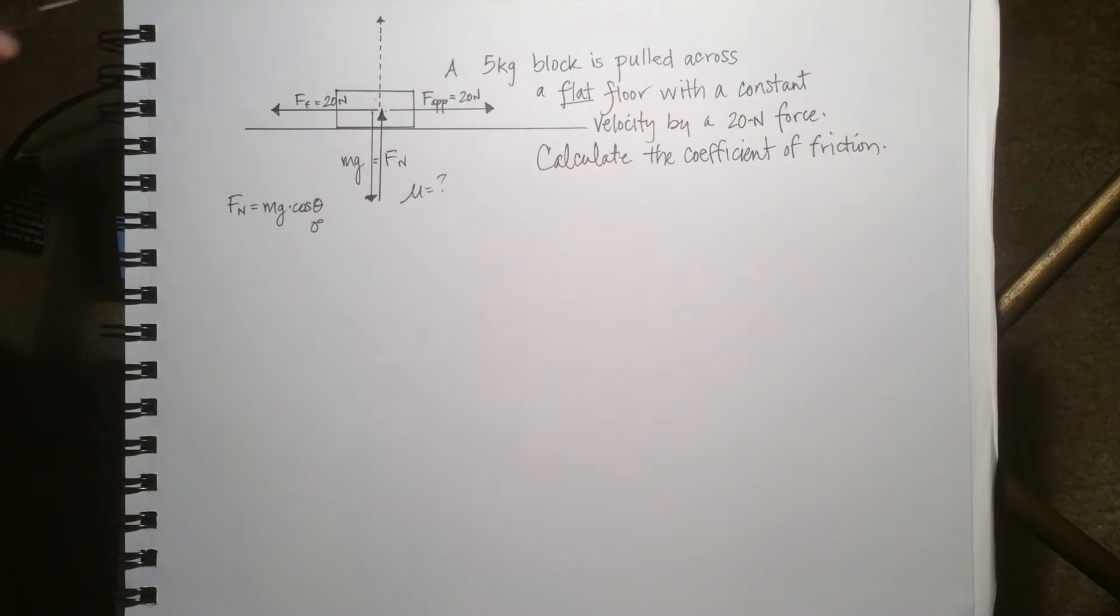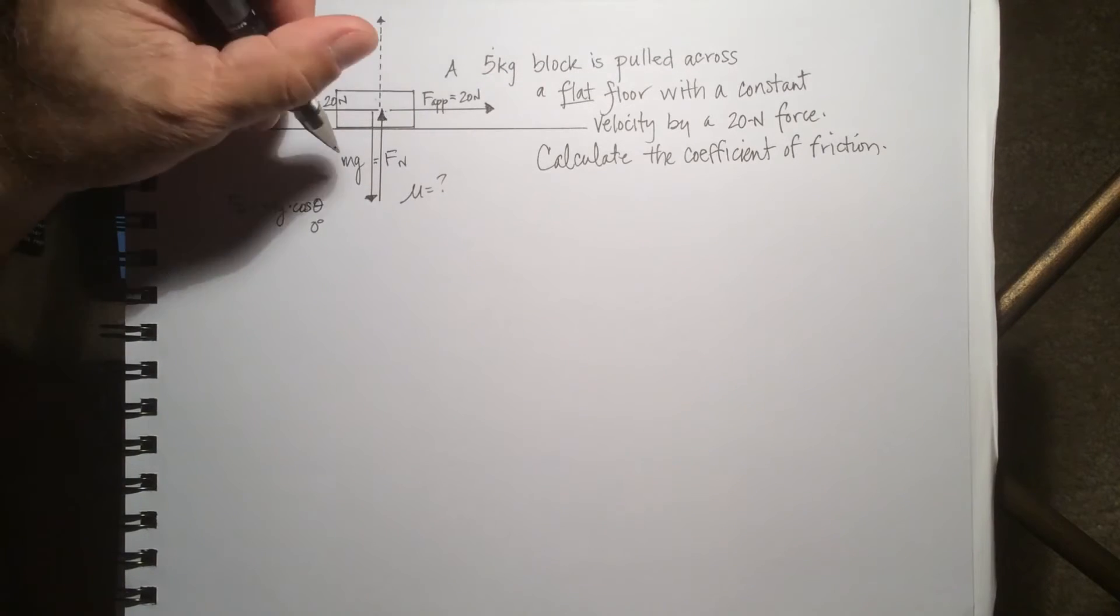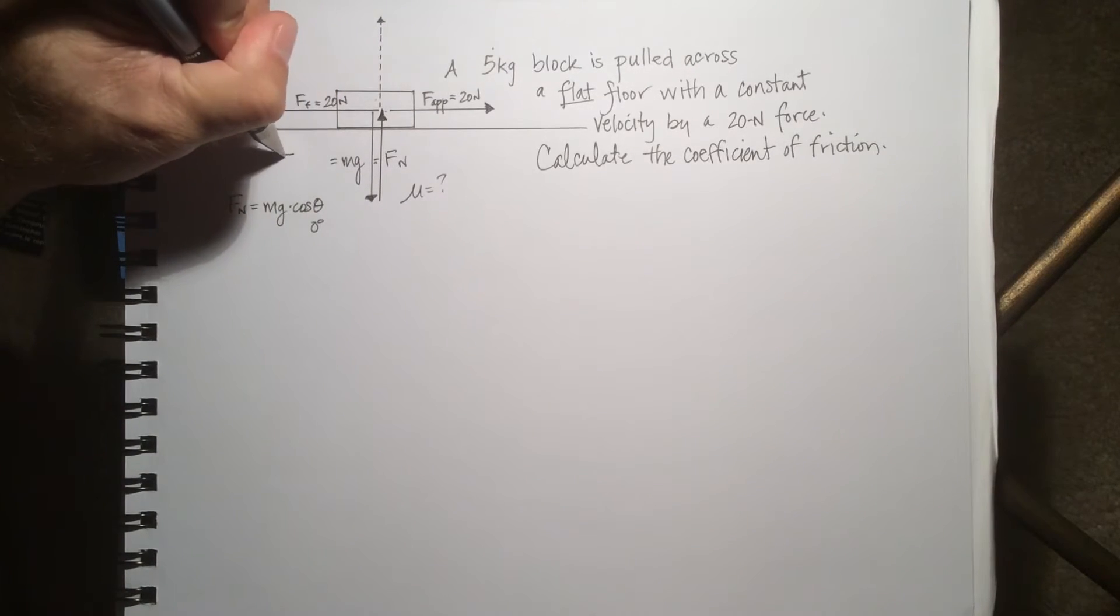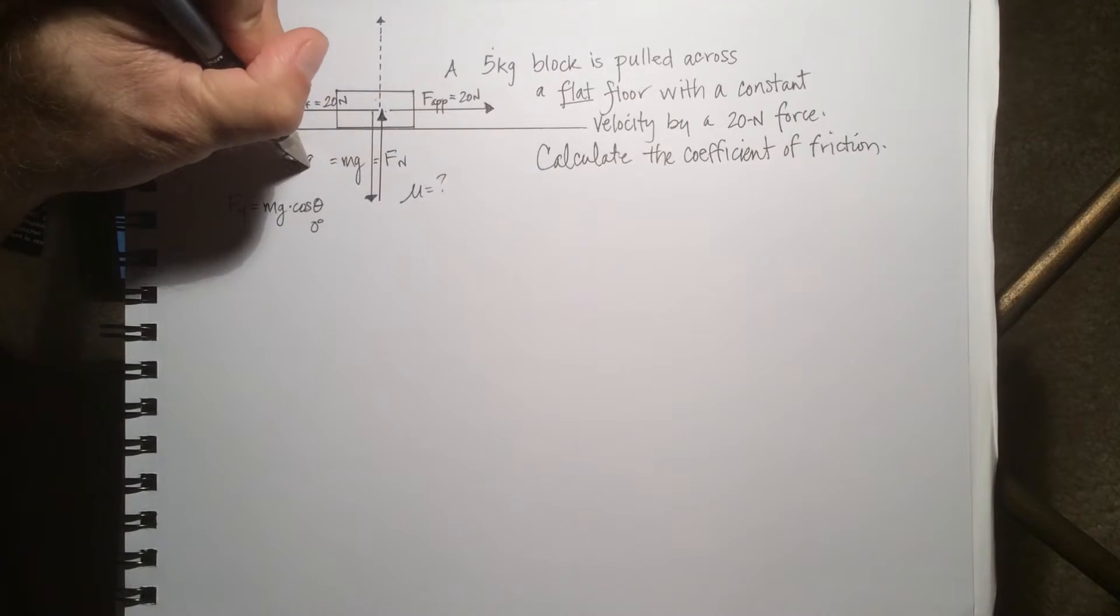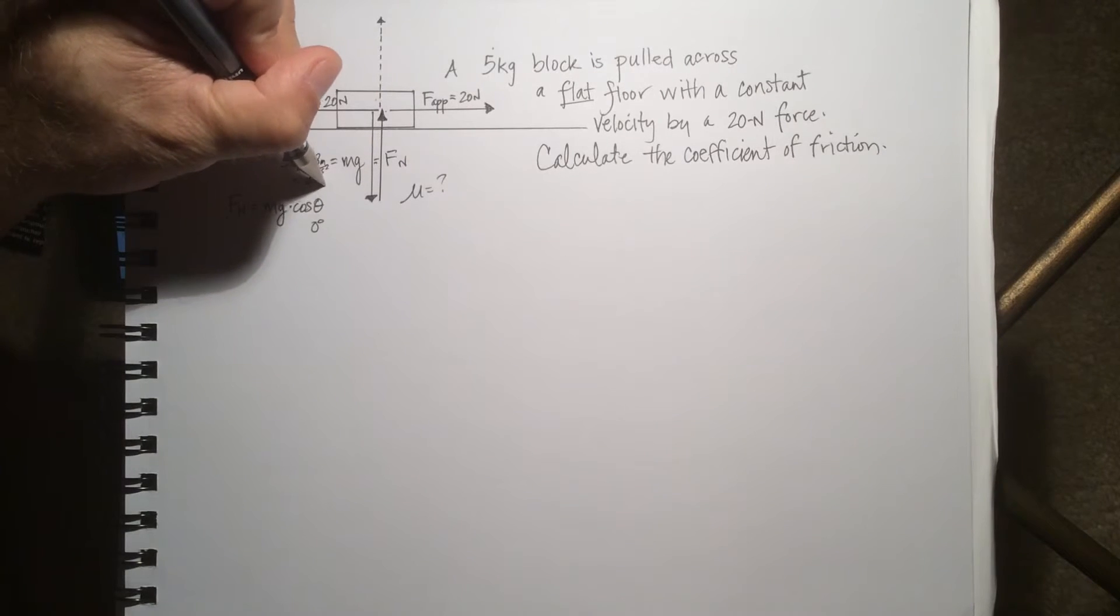All those things being identified, we can say that this is a 5 kilogram block. mg is equal to 5 kilograms times 9.8 meters per second squared, which is 49 Newtons.